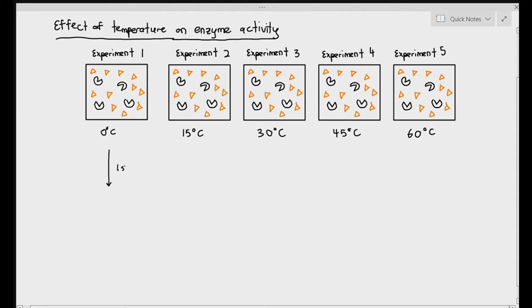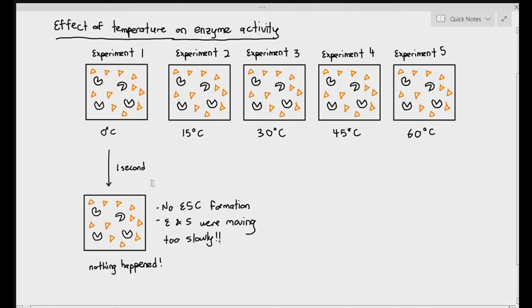For experiment number one, by the way, these results are theoretical, which means these are not results you have to memorize. This is just the way I teach it to my students to make it easier for them to understand. For experiment number one, nothing happened. There was no initial rate of reaction because no enzyme substrate complexes were formed at all. The reason why it couldn't form was because the enzymes and substrates were probably moving too slowly for them to even meet each other for an effective collision.